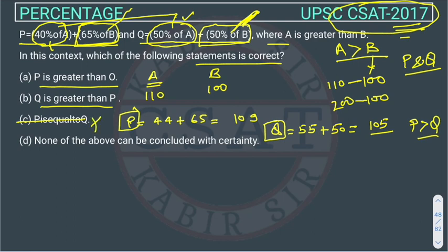P equals Q - we can cancel this one. And Q is greater than P, we can also cancel this. Now, let's assume the second case where we are taking A value as 200 and B value as 100.